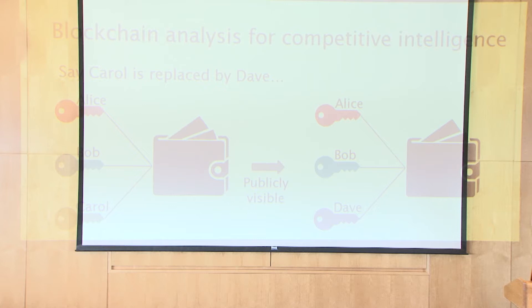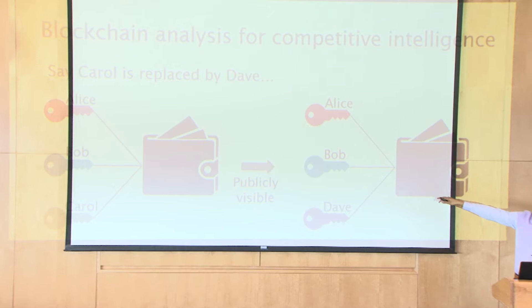You might wonder: does this commonly happen? It turns out that when we did this analysis, something like 20,000 transactions per month expose internal confidential company information in this way on the public Bitcoin blockchain. So that is something you might not have expected — it is so commonly going on.